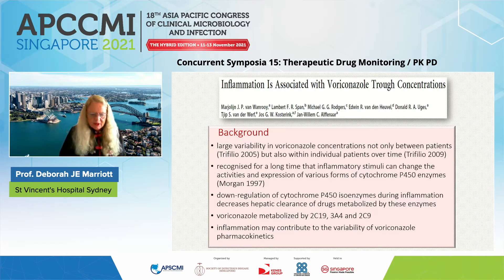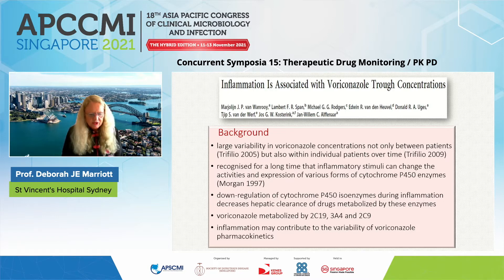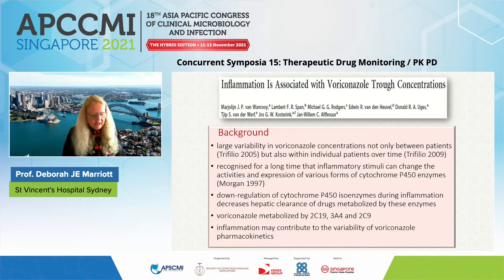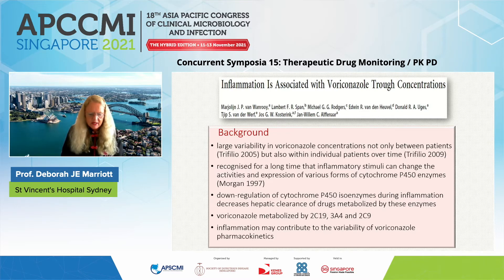This phenomenon was first recognized by Jan-Wilhelm Alfenar's group around 2016, who identified large variability in voriconazole concentrations not only between patients but also within individual patients over time. It's been known since the late 1990s that inflammatory stimuli can change the activities and expression of cytochrome P450 enzymes. The down-regulation of cytochrome P450 enzymes during inflammation decreases hepatic clearance of drugs metabolized by these enzymes, and voriconazole is metabolized by 2C19, 2C9 and 3A4 — so inflammation may well contribute to voriconazole pharmacokinetic variability.